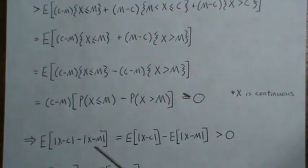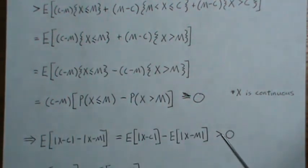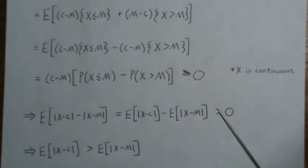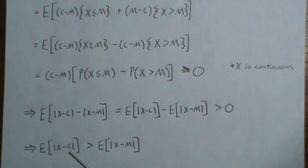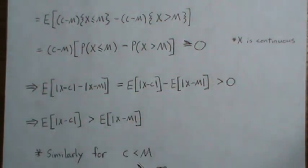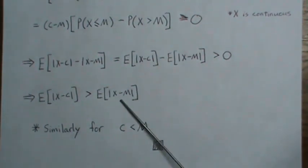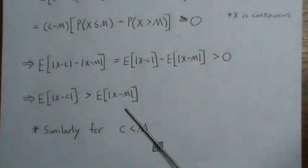Taking the expected value of the full expression using linearity, we know it's greater than or equal to zero. Moving the term to the other side, this says that for any c greater than the median, this expectation is always going to be bigger than the expectation when we use the median. There's a similar proof when c is less than m, and we end up with the same result. So that shows that this expectation is minimized when we use the median.